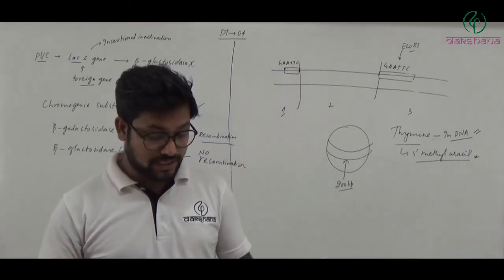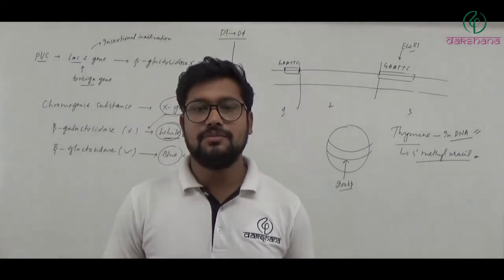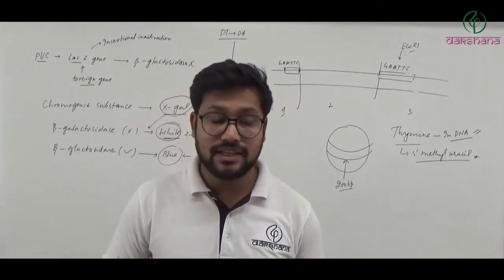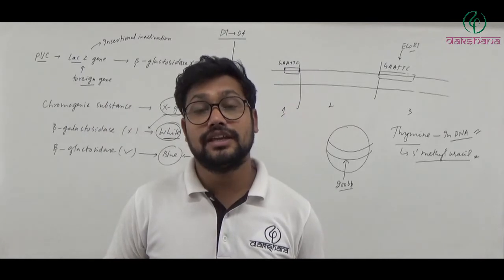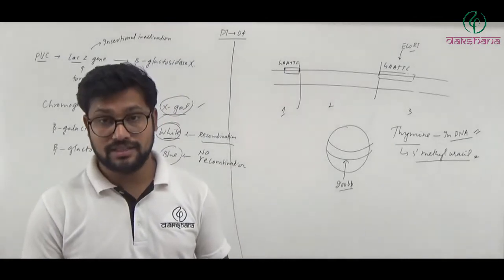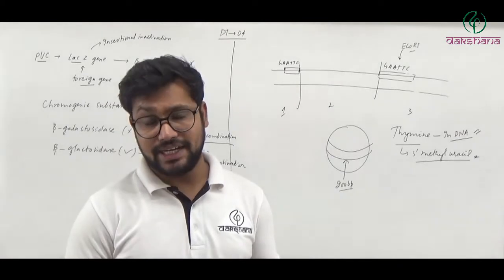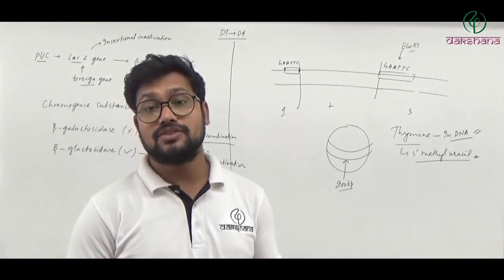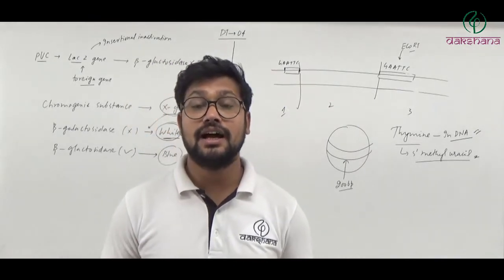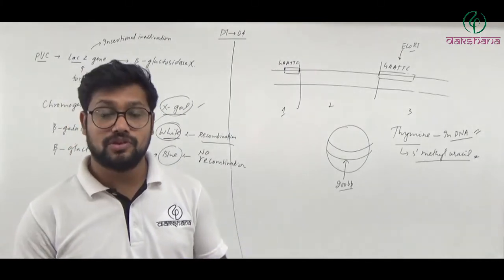Question number twenty-three: DNA polymerase is similar to RNA polymerase in what? Both DNA polymerase and RNA polymerase work in the 5' to 3' direction. DNA polymerase performs replication of DNA in 5' to 3' direction, and RNA polymerase (DNA-dependent RNA polymerase) performs transcription also in 5' to 3' direction. So question number twenty-three's second option is the right answer.